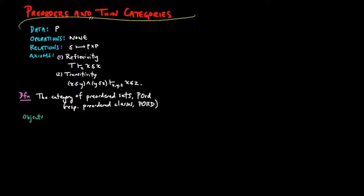In other words, the objects of this category consist of pairs P with a relation, where P is a set, respectively class, and the relation less than or equal to is a subcollection of the Cartesian product of P and P.